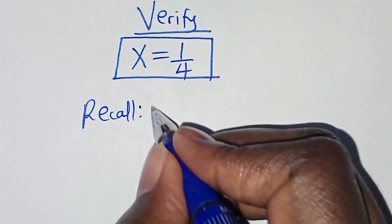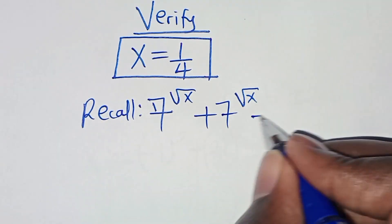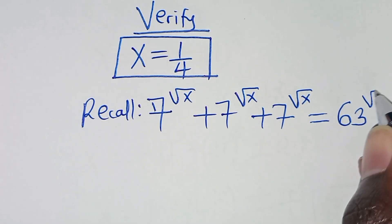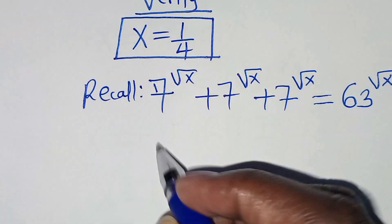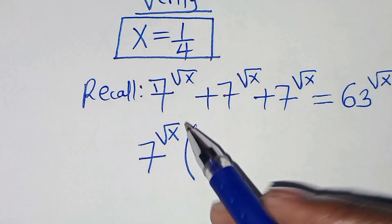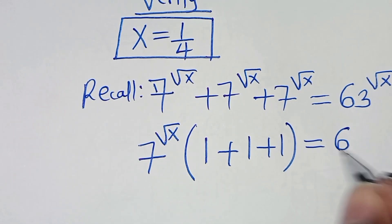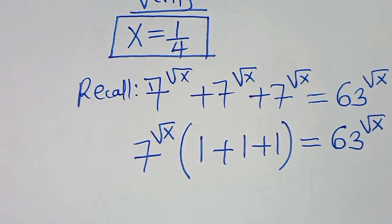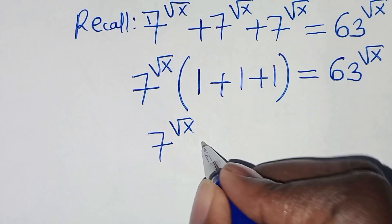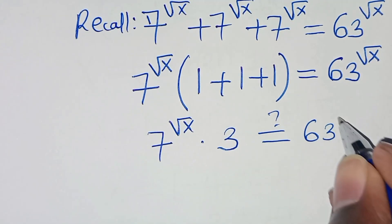Recalling the equation, we have 7 to the power of square root of x plus 7 to the power of square root of x plus 7 to the power of square root of x. Since 7 to the power of square root of x is common, we factor it out, giving 7 to the power of square root of x times (1 plus 1 plus 1), which equals 63 to the power of square root of x. So we have 7 to the power of square root of x times 3, equal to 63 to the power of square root of x.